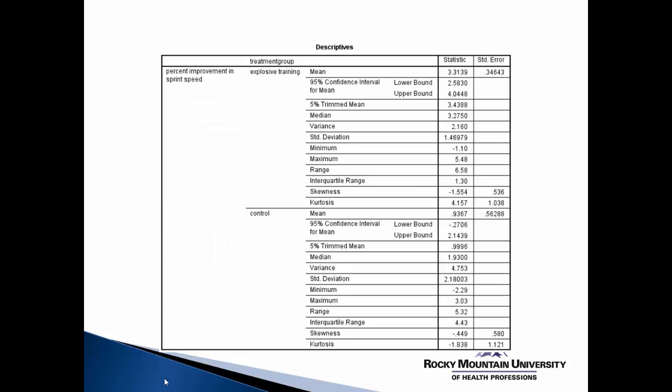Now, where to get most of this information? Here's an example of an SPSS output showing the descriptives for different groups for one particular outcome. Here you'll be able to find your mean, your confidence intervals, your standard deviation, minimum, maximum, and so on. So this is really where you're going to get the bulk of your descriptive information as you describe your sample and your different outcomes.